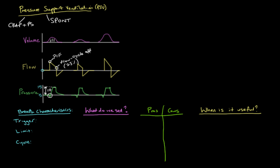Let's talk about the breath characteristics. The trigger variable — what causes the breath to begin — is patient effort. Specifically, it's due to a drop in the circuit pressure, so the variable is pressure. On some ventilators, you can also trigger using flow: if the patient generates enough of a change in flow in the circuit, it can trigger the breath. But it's going to be pressure or flow — usually pressure.